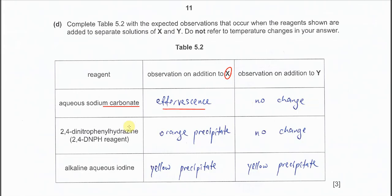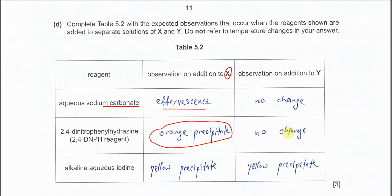When adding 2,4-DNPH: X contains a ketone, so it forms an orange precipitate. Y cannot form an orange precipitate because both functional groups in Y are alcohols.